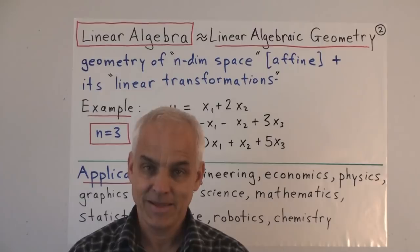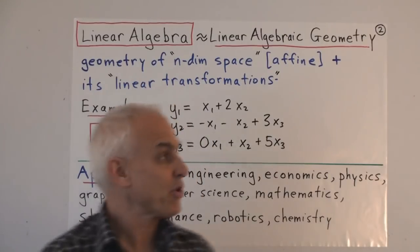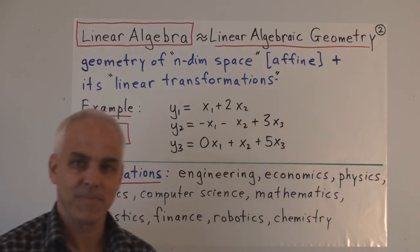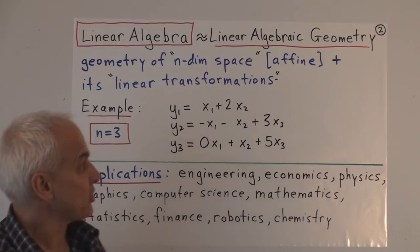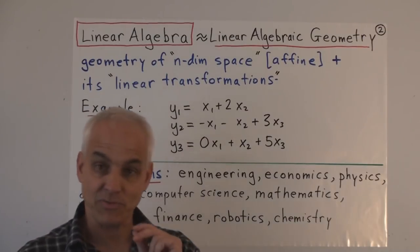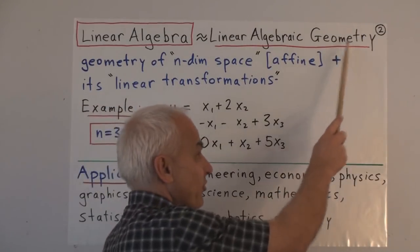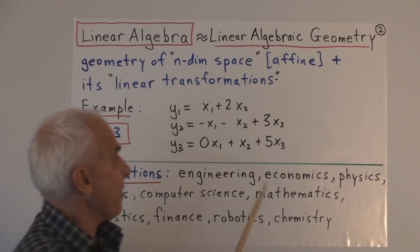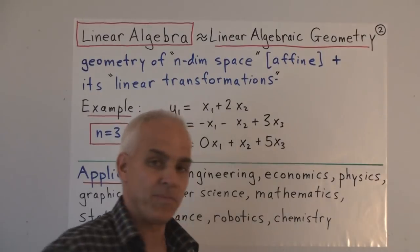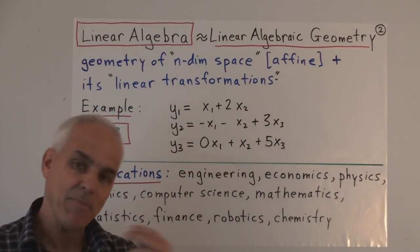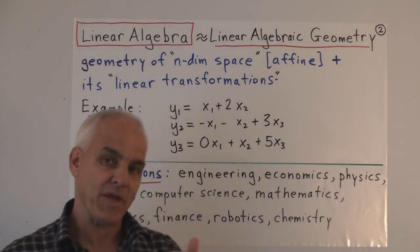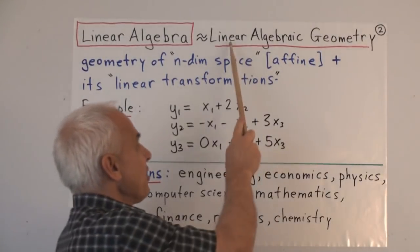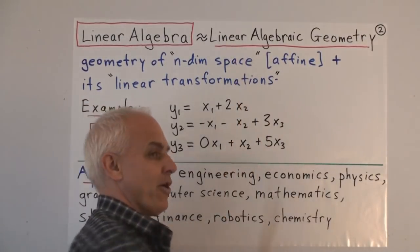What is Linear Algebra? Linear Algebra could also be called Linear Algebraic Geometry. That's a good description because Linear Algebra is really a lot about geometry, but it's geometry viewed from an algebraic point of view. And the type of algebra that we're going to be using is of the simplest kind — namely, it's the linear kind.